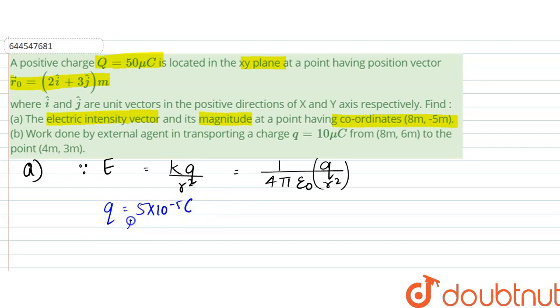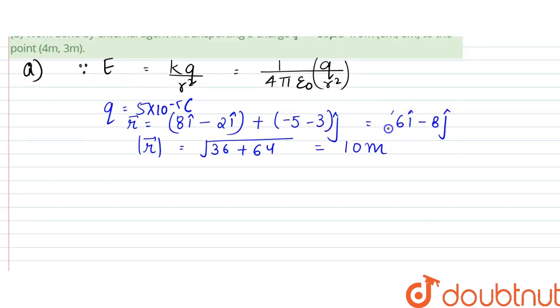r would be equal to final position, that is 8i minus 2i plus minus 5 minus 3j. So that would be equal to 6i minus 8j. The magnitude of r can be written as root over of 36 plus 64, which is equal to 10 meters. 6i minus 8j in meters.